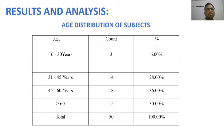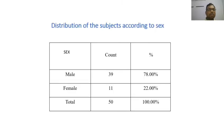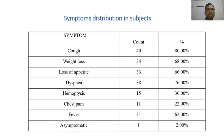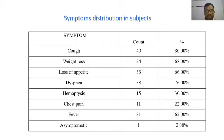Results and analysis: This table shows the distribution of subjects. Most patients are in the 45 to 60 years age group. Regarding gender distribution, 39 patients are male and 11 are female. Regarding symptom distribution, most patients present with cough (80%) followed by dyspnea (76%).